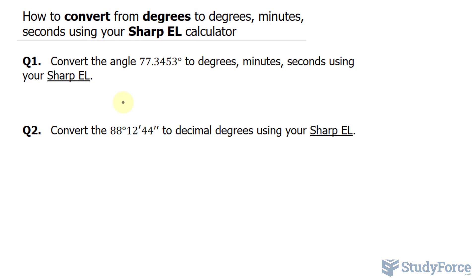That's the answer to question number one. In question number two, we have to convert 88 degrees, 12 minutes, and 44 seconds to decimal degrees using the same calculator.